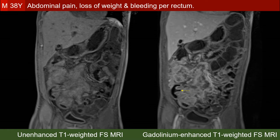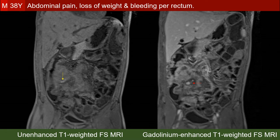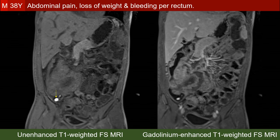This is the ileocecal valve. On this unenhanced T1-weighted image we again see high signal intensity spots within the lesion. On the contrast-enhanced image, the red arrow points to the aneurysms or pseudoaneurysms filling with gadolinium contrast agent. We can see on both image types how extensive the involvement of the wall of the right side of the colon is — it involves the whole right colon and even the ileocecal region. Inside the lumen of the cecum, we see a very bright structure on the fat-saturated T1-weighted images.